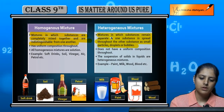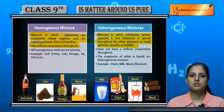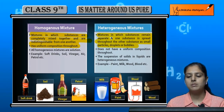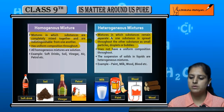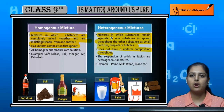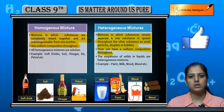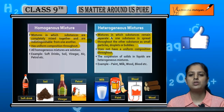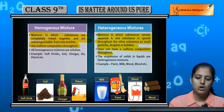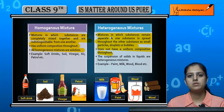In a homogeneous mixture, there is uniform composition — for example, in a salt solution, wherever you look, it appears the same. In heterogeneous mixtures, there is no uniform composition. For example, in chalk-in-water mixture, if you look from the top you will see clear water at the top and settled chalk at the bottom — so there is no uniform composition throughout.